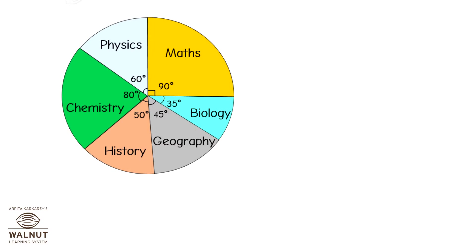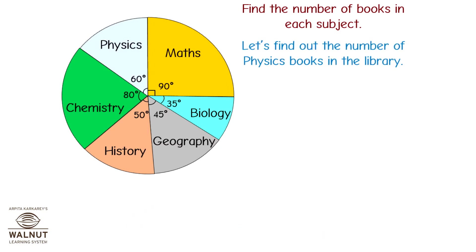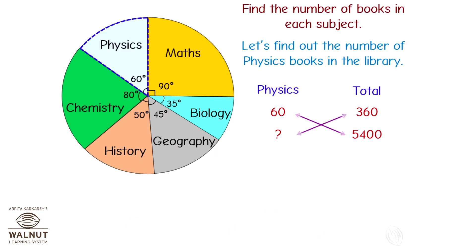Look at the pie chart. In a library, there are 5,400 books in all. The proportion of books on history, geography, biology, mathematics, physics, and chemistry available in the library is shown in the pie chart. Find the number of books in each subject. Direct proportion and cross multiplication will help you here. Let's find the number of physics books — the angle of physics is 60 degrees out of 360 degrees, out of a total of 5,400. Set up the table and apply cross multiplication.